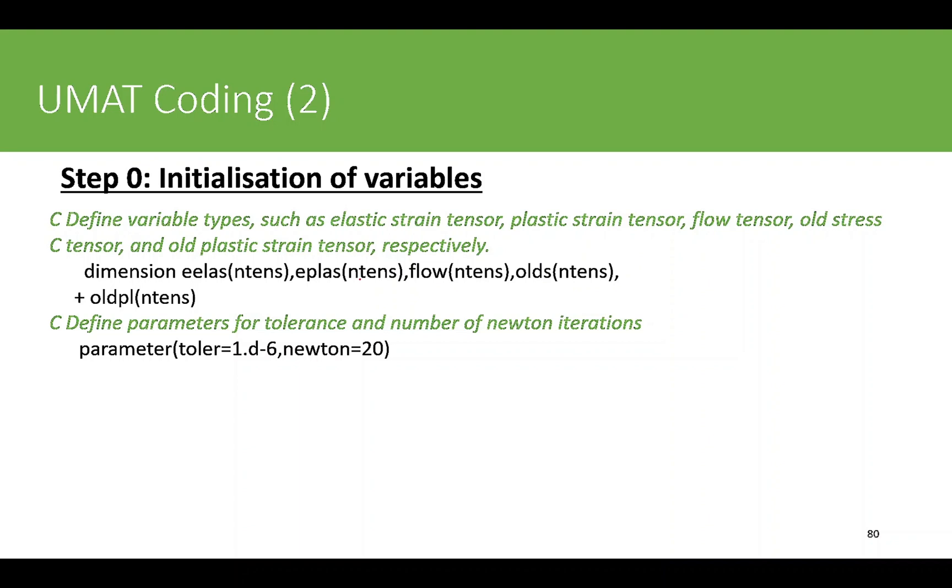If it's a 3D problem as I told you before, it will be 6 components. Similarly, the parameters like tolerance equals 1 times 10^-6 and the Newton iteration maximum value of 20. After 20 iterations you basically say that your plasticity loop has not converged and we need to do something about it. You can also increase this value if you think it will improve convergence.